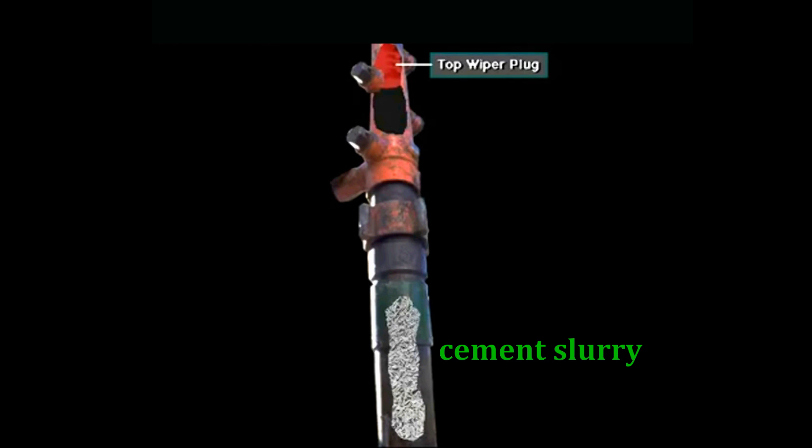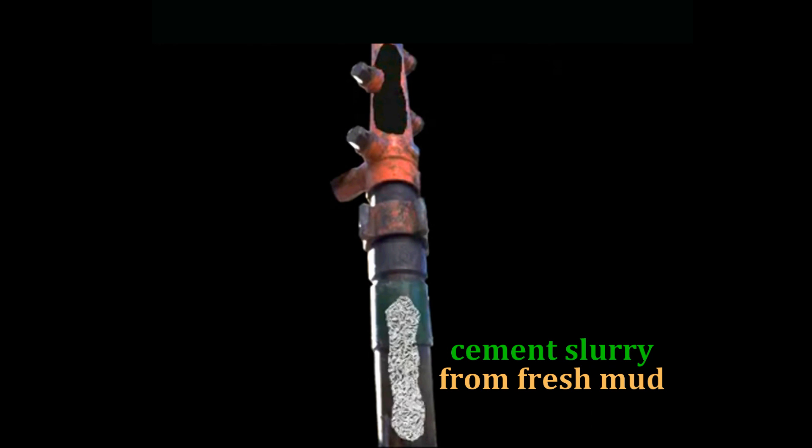When adequate cement has been pumped, a second plug, called a seal plug, is then inserted. This seal plug serves to separate the cement slurry from the fresh mud that follows.